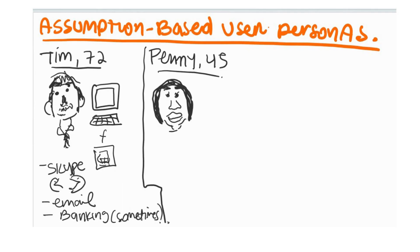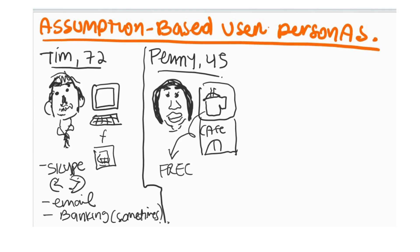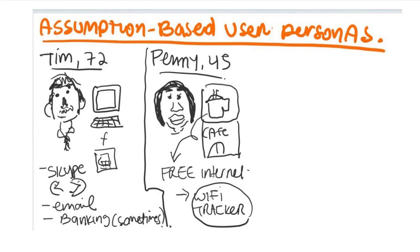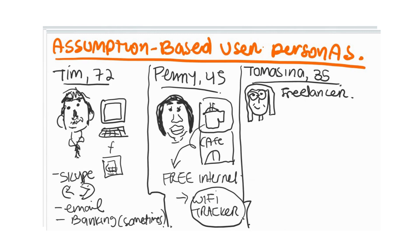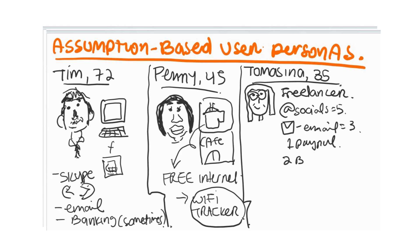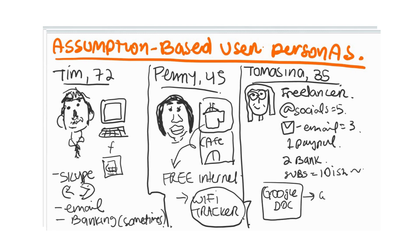Tim uses Facebook and Skype to keep in touch with family and friends, has one email account, and occasionally checks his bank account from his computer. My second assumption-based persona is Penny. She is a 45-year-old who recently opened her own cafe where she provides complimentary free internet to her customers. She changes her internet password twice a day and has employees working two different shifts. In her case, I'm thinking of a password logbook — more of a password tracker — tailored to exclusively keep track of the cafe's wi-fi passwords.